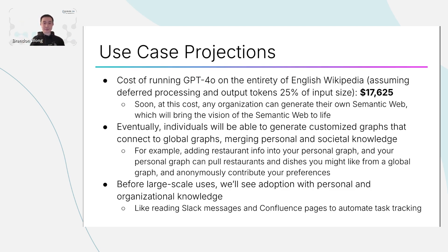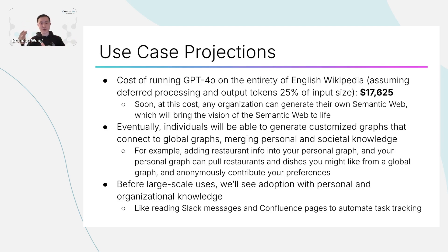Your personal graph could then anonymously contribute your preferences into the global graph, so other people looking for dishes might see that you like those and determine they're likely to like them as well. Before larger-scale uses, I think we're going to see a lot of adoption on personal and organizational knowledge bases. One practical implementation is a graph generation system that reads all your Slack messages and Confluence pages to automate or greatly assist with task tracking. If someone says they completed a task, you don't need to go into Jira and update the status. If they say they're blocked for a reason, you can even auto-create the task and auto-link it into an existing task — really exciting possibilities.